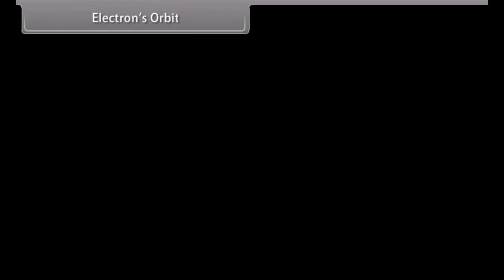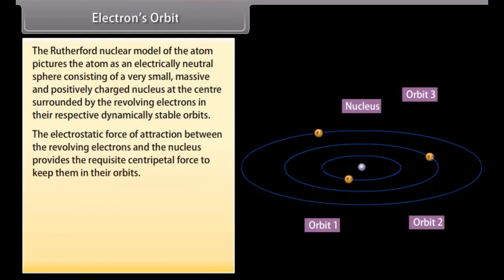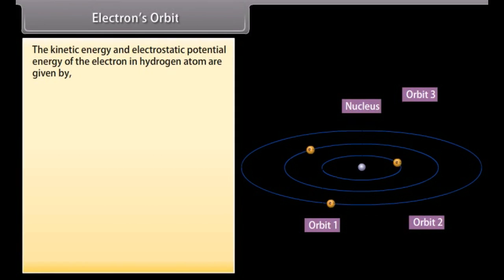Electrons orbit. The Rutherford nuclear model of the atom pictures the atom as an electrically neutral sphere consisting of a very small massive and positively charged nucleus at the center surrounded by the revolving electrons in their respective dynamically stable orbits. The electrostatic force of attraction between the revolving electrons and the nucleus provides the requisite centripetal force to keep them in their orbits. Fe is equal to Fc. Putting their respective values we get Mv square by R is equal to 1 upon 4 pi epsilon not E square upon R square. We can also write this equation as R equals E square upon 4 pi epsilon not Mv square.